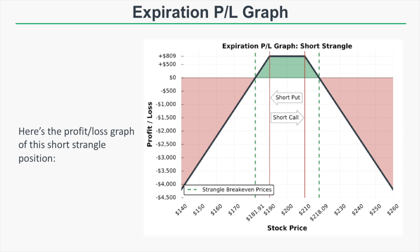Here is the expiration risk profile graph for this short strangle. The middle portion of the graph represents maximum profit. If the stock price is between the short call and short put strikes at expiration, both options expire worthless and you keep the entire credit. In this example, we sold the 190 put and 210 call for a total credit of $8.09, so our maximum profit is $809. If the stock price is between $190 and $210 at expiration, we realize that $809 profit.